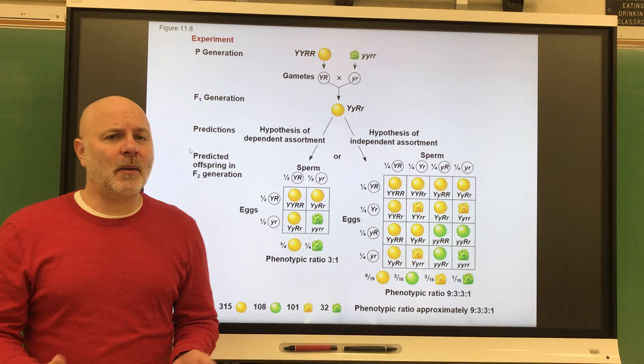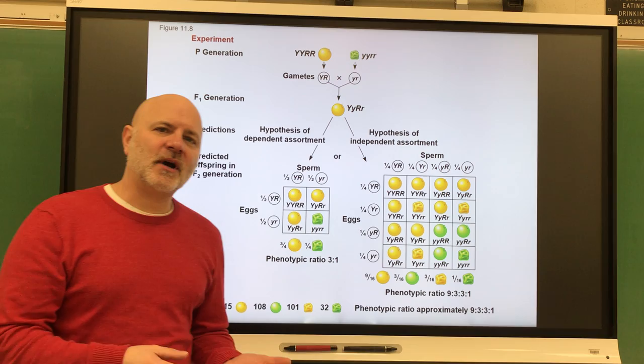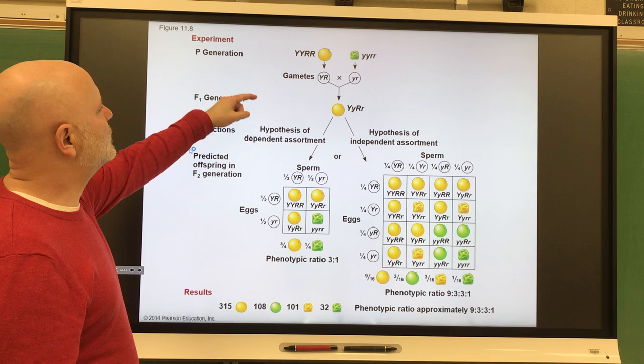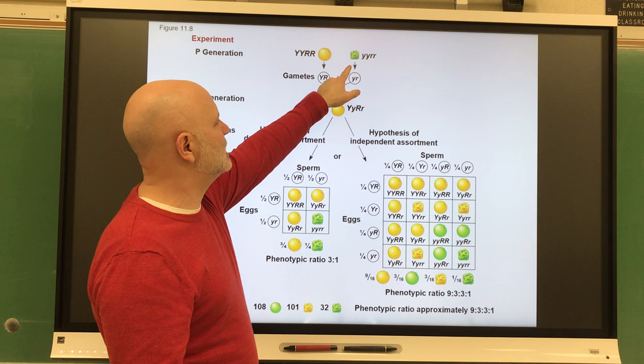After Mendel did a monohybrid cross, the next kind of experiment he did is a dihybrid cross. A dihybrid cross is a mating of individuals that differ by two traits. This is looking at what Mendel looked at with a dihybrid cross. He took a seed that was yellow and round and crossed it with a seed that was green and wrinkled.